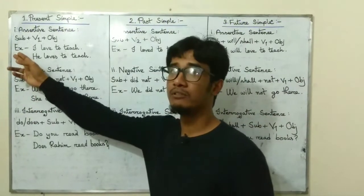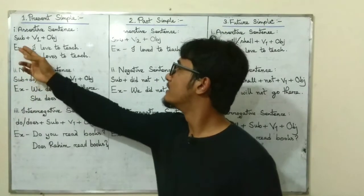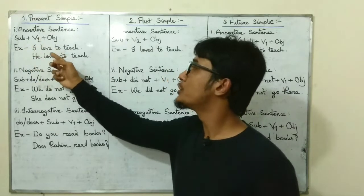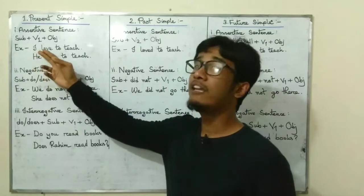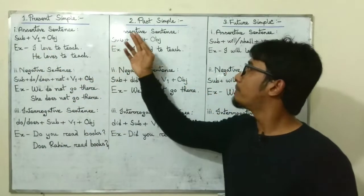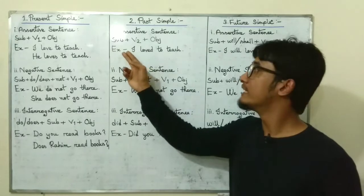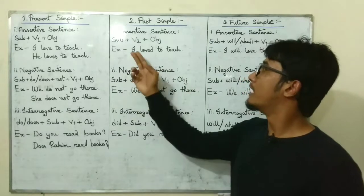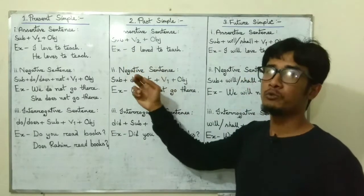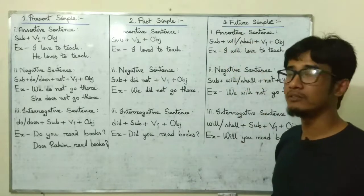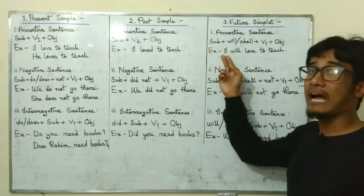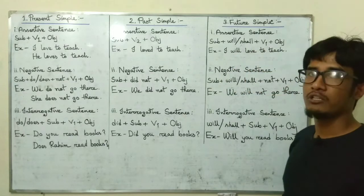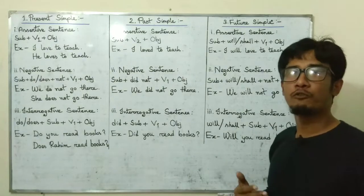In present simple, the example is: subject I, V1 love, object to teach — so the sentence is 'I love to teach.' In past simple: subject I, then V2 loved, object to teach — the sentence is 'I loved to teach.' And finally in future simple: subject I, will, V1 love, object to teach — so the sentence is 'I will love to teach.'